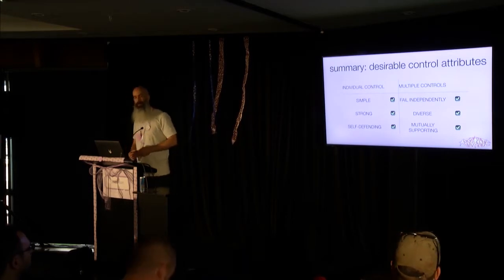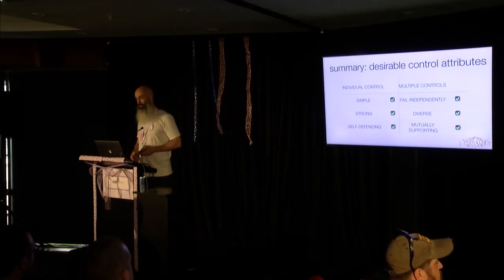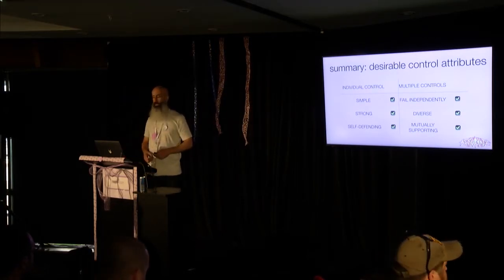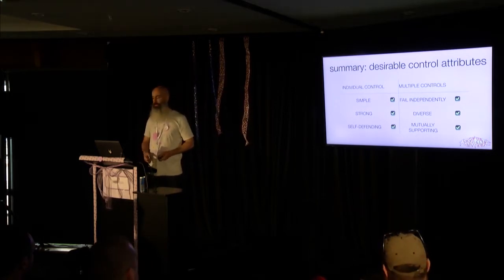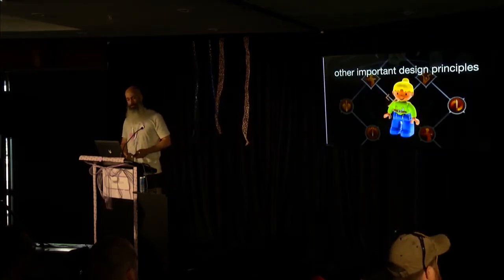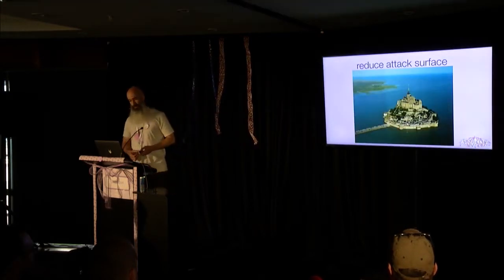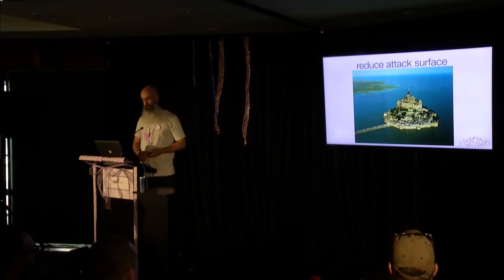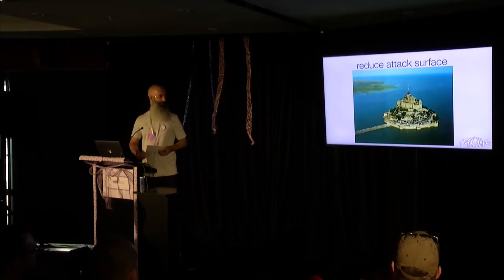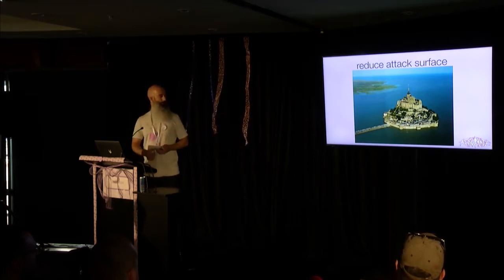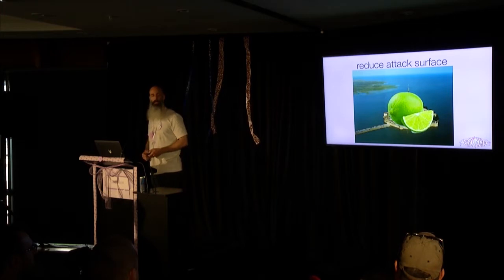So in summary: three simple attributes for individual controls — simple, strong, self-defending — and three attributes for how they interact with each other. These aren't the only things we're looking for when designing security controls; there are some other important principles. Reducing attack surface wherever we can — a great example is Mont Saint-Michel in France. It's going to be really hard to attack that unless you have a bunch of boats, and even with boats you'll have trouble because at high tide it's surrounded by water, and at low tide there's land around it. Pretty secure limes.